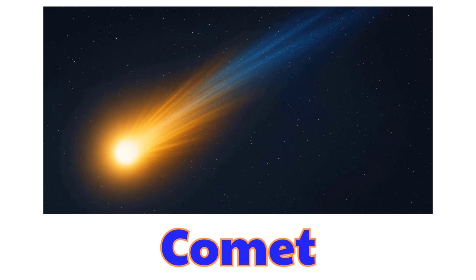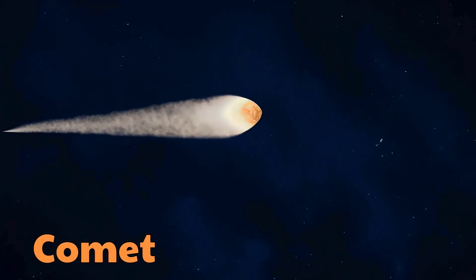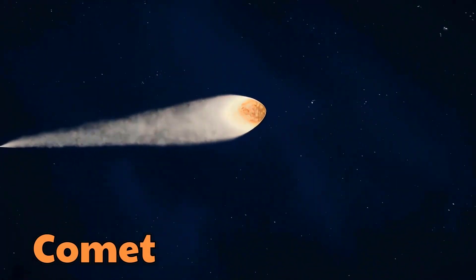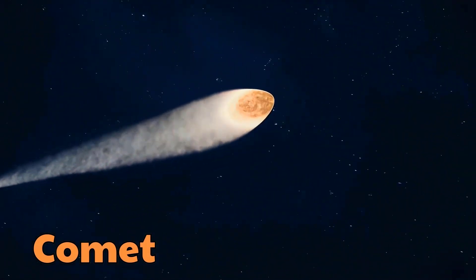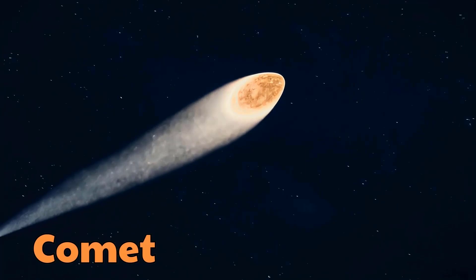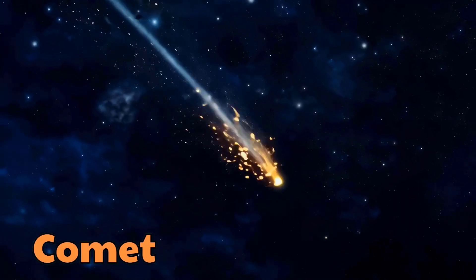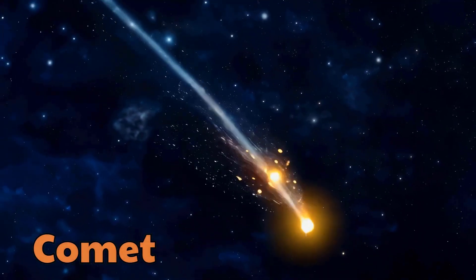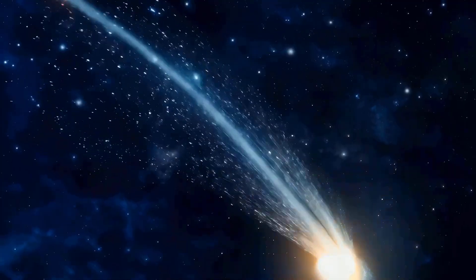Comet. This is a comet. A comet is a small celestial body made of ice and dust. When it comes close to the sun, it heats up and releases gas, forming a long, bright tail.